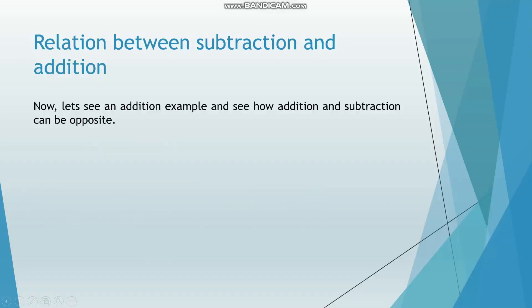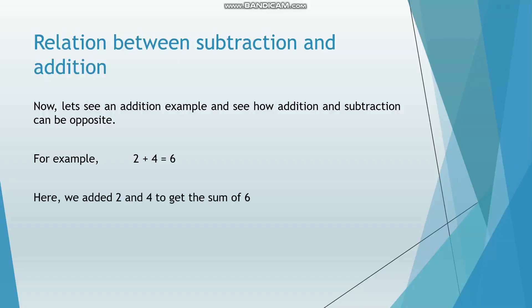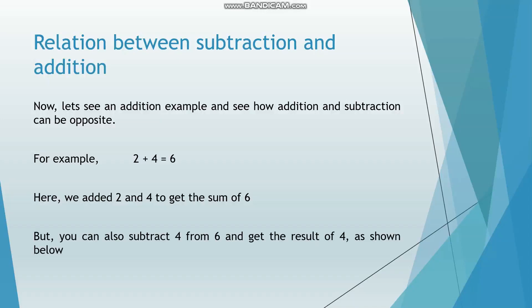Now let's see an addition example and see how addition and subtraction can be opposite. For example, we take 2 plus 4 equals 6. Here we added 2 and 4 to get the sum of 6. But you can also subtract 4 from 6 and get the result of 2, as shown below: 6 minus 4 is equal to 2.